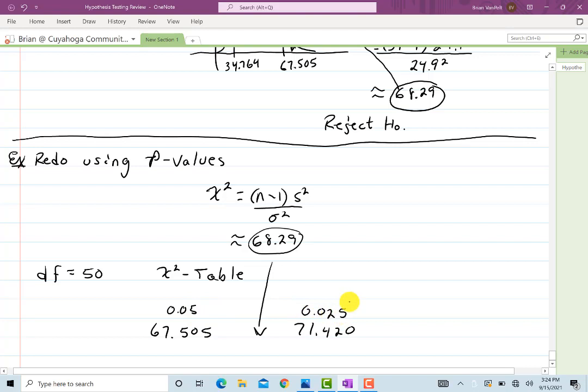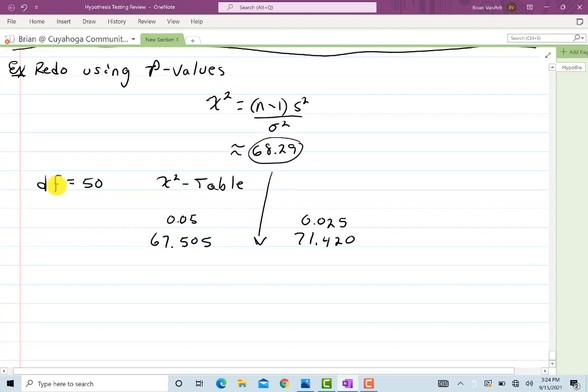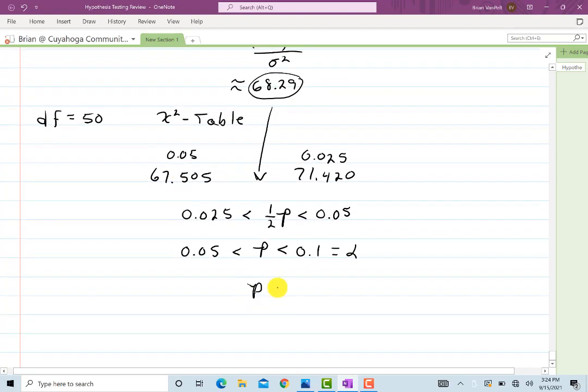Now just like the alpha regions, you break up the P regions in two. What that means is my P value is between, actually half of the P value is between these two values. So I know that 0.025 is less than half of P. Remember, you break it into two equal pieces because you're doing a two-tailed test. And 0.05. Now I'll multiply everything through by two. So I'll get 0.05 is less than P is less than 0.1. Well, 0.1 is equal to alpha. So we have that P is less than alpha, which means we reject H naught.